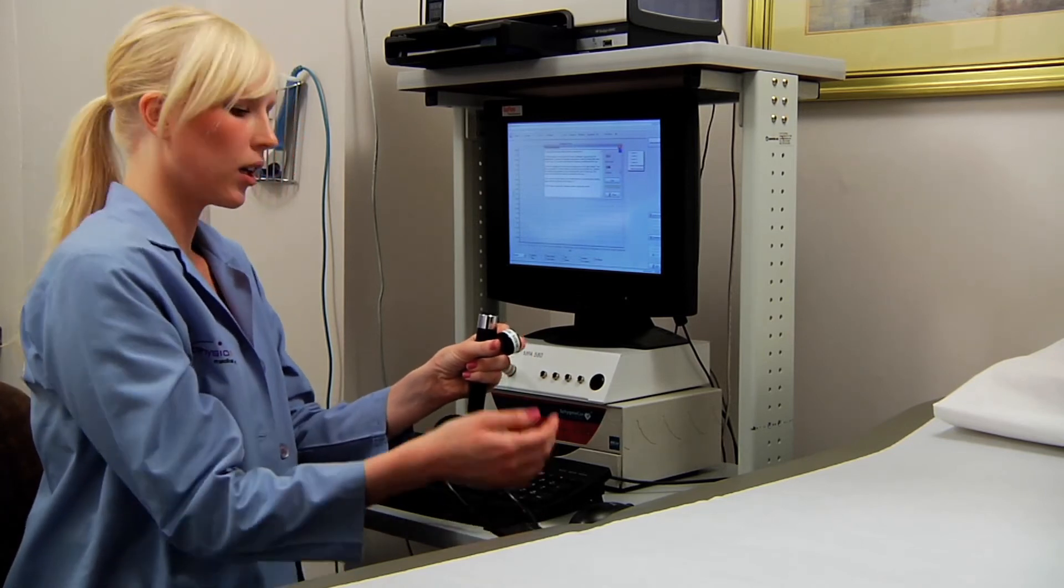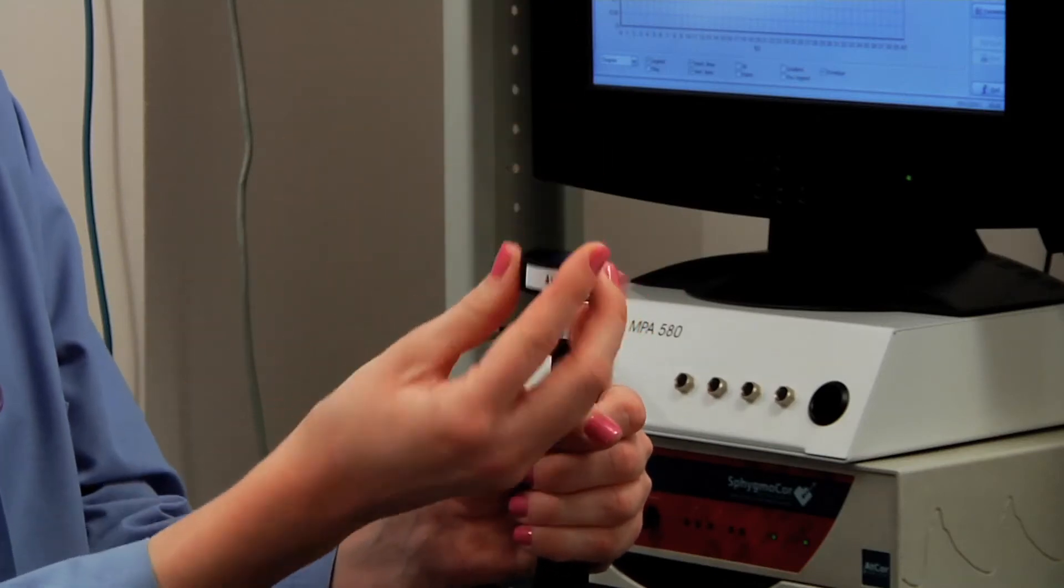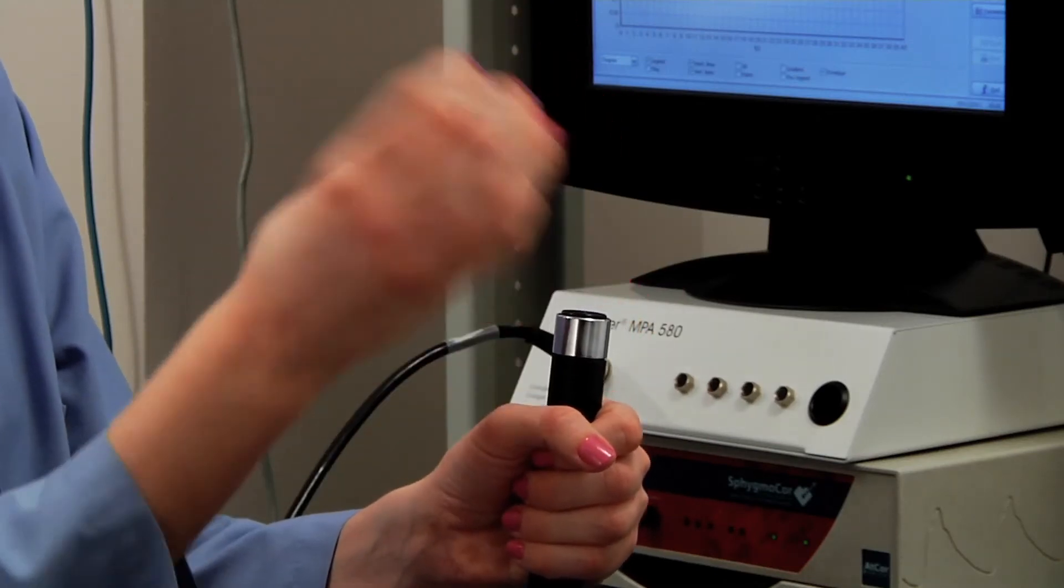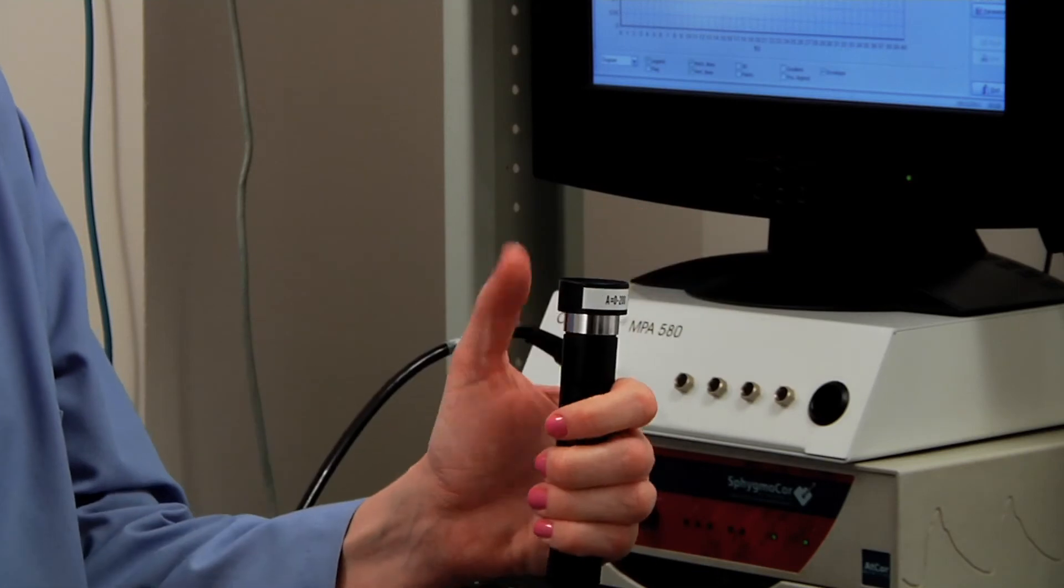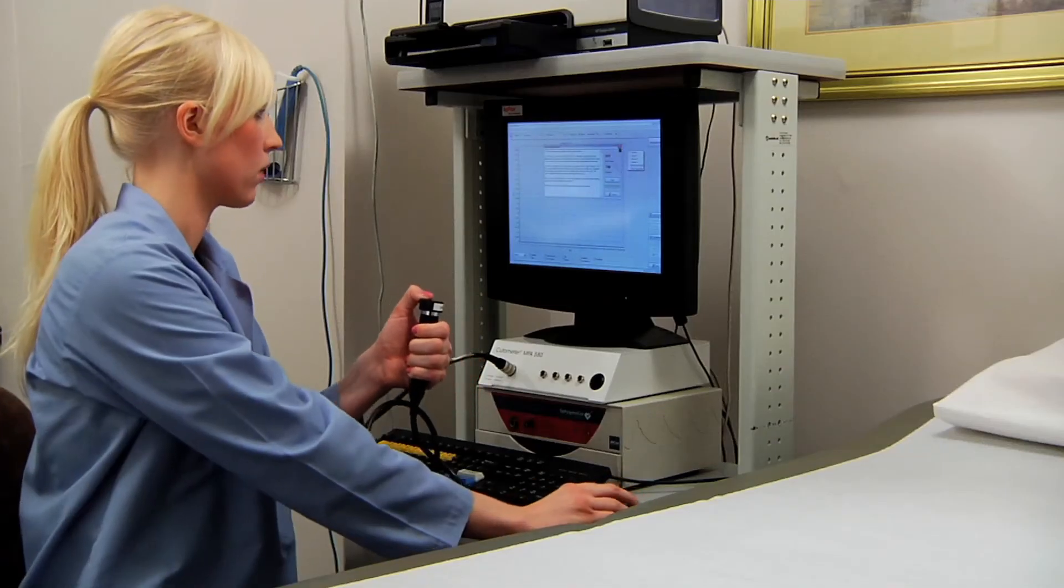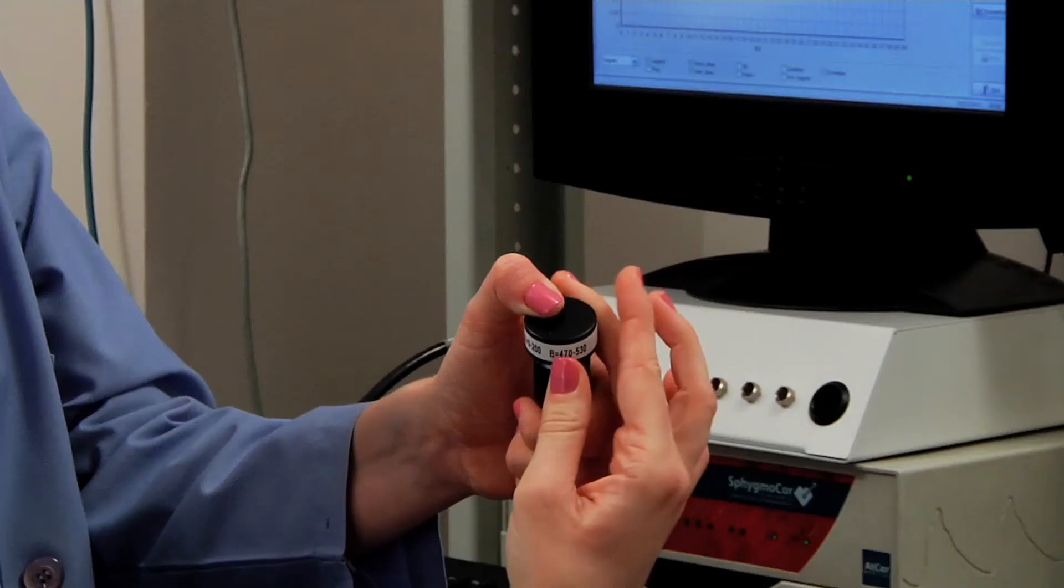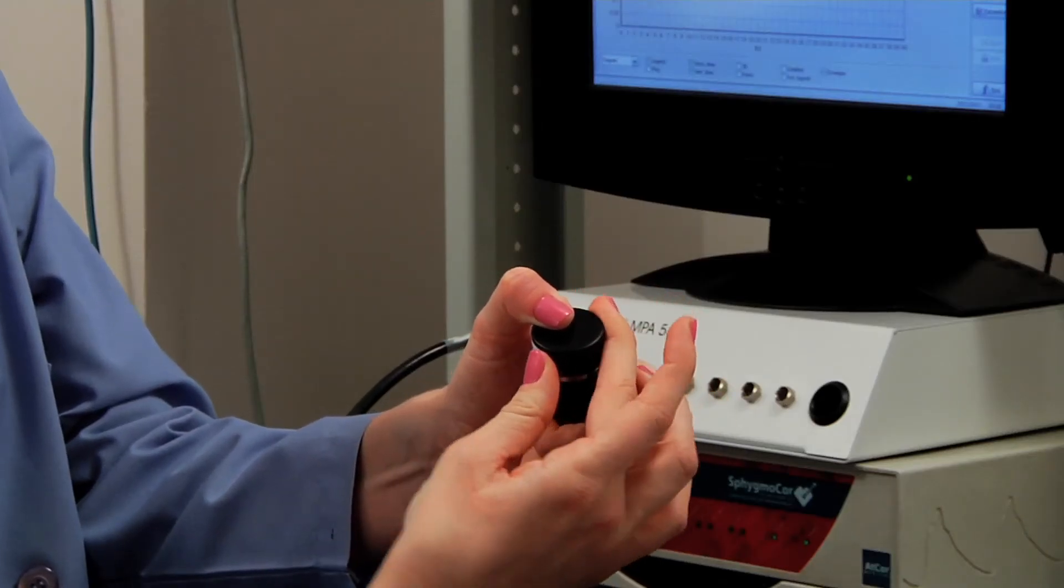For the second part of the calibration, you're going to put the cap tightly onto the probe. Instead of before you had it turned over, now you're going to actually put it on top of the probe. And you're going to push down, push the start button, turn the cap one full rotation while it's calibrating.